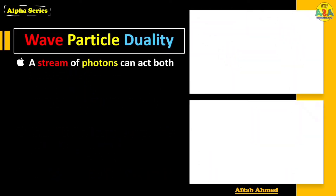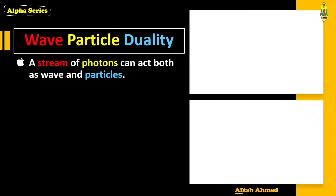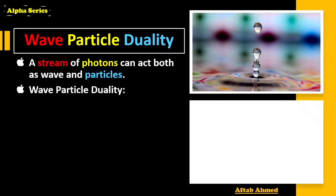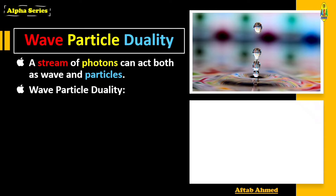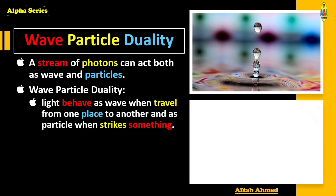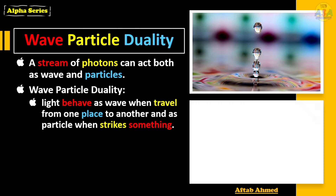All types of light are streams of photons. A stream of photons can act both as a wave and as particles — this is called wave-particle duality. Light behaves as a wave when traveling from one place to another, and as a particle when it strikes something, such as in light-matter interaction.